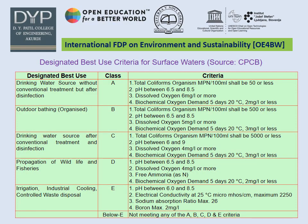For these designated uses, criteria have been given for total coliform number expressed as MPN (most probable number) per 100 ml, pH, dissolved oxygen, BOD, free ammonia, sodium absorption ratio, boron, and so on.